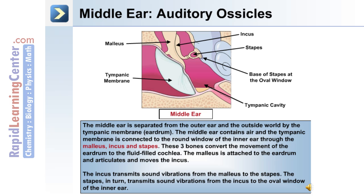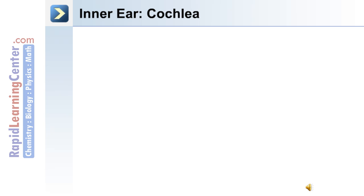The middle ear contains air and the tympanic membrane, which is connected through the malleus, incus, and stapes. These three bones convert the movement of the eardrum to the fluid-filled cochlea. The malleus is attached to the eardrum and articulates with the incus. The incus transmits sound vibrations to the stapes, which in turn transmits sound vibrations from the incus to the oval window of the inner ear.